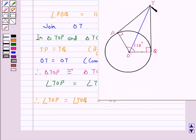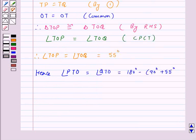So in triangle TOP and TOQ we have angle TPO and TQO as 90 degrees and angle TOP and TOQ as 55 degrees. So we have angle PTO is equal to angle QTO is equal to 180 degrees minus 90 degrees plus 55 degrees. Because the sum of the three angles of a triangle is 180 degrees, and this is equal to 35 degrees.